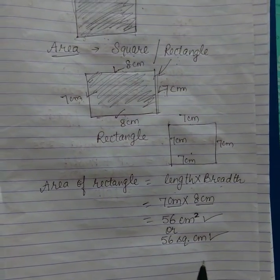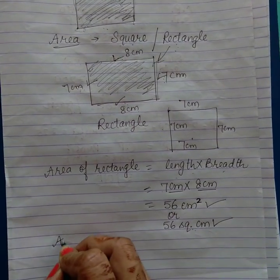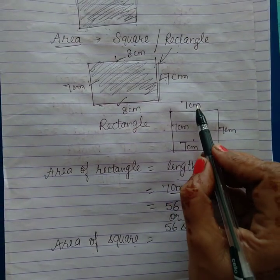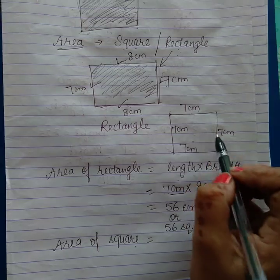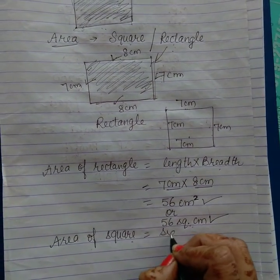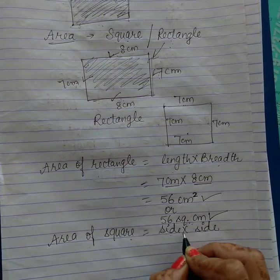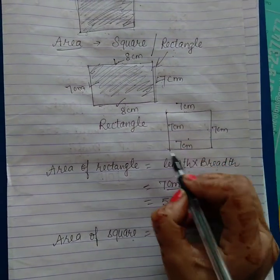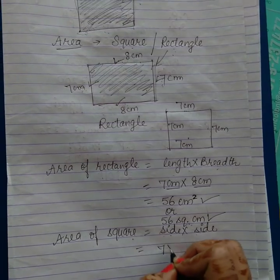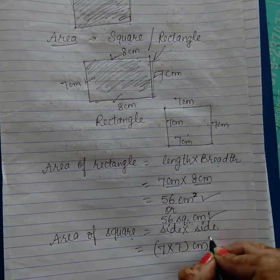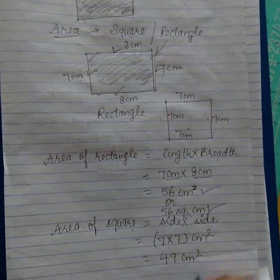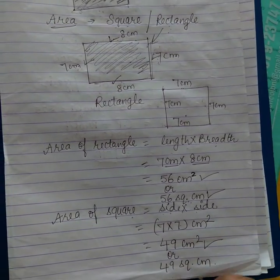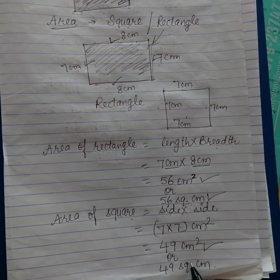Both ways of writing the answer are correct — you can follow either one pattern. Next is area of square. Square का area निकालते हैं — since four sides are equal, we take side into side. So if side is 7, then 7 × 7 = 49. Your answer is 49 square centimeters. Both forms are right — you can follow one pattern.